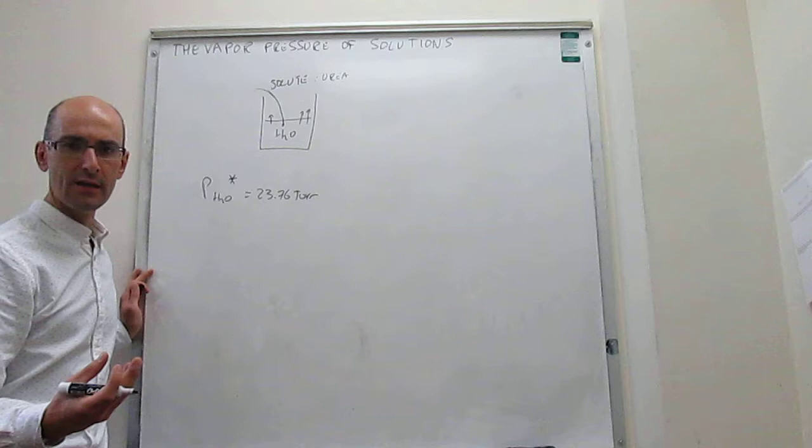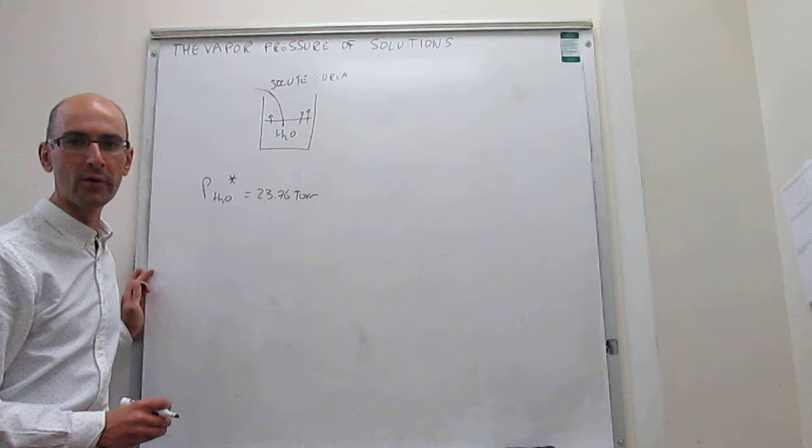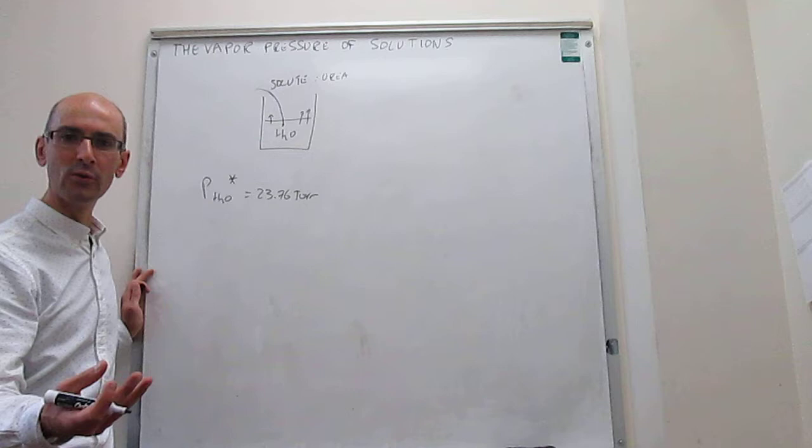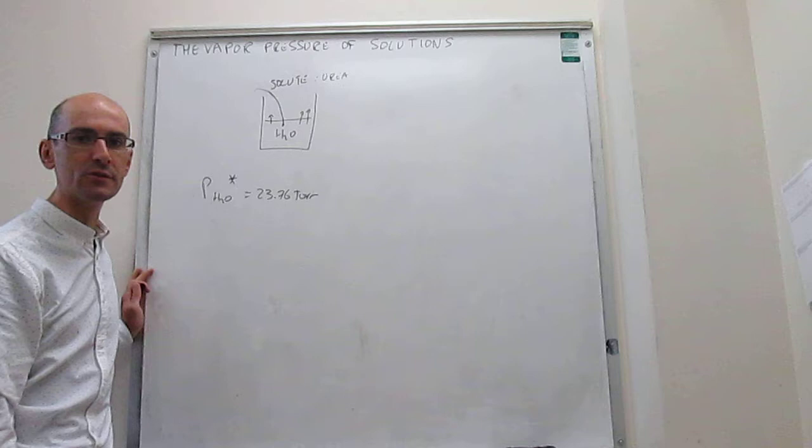Now there is an enthalpy penalty to it because you have to break the interactions between water molecules in the liquid. And then the vapor pressure is a balance of the entropy that you gain by putting molecules in the gas phase and the energy that you need to put in to be able to vaporize those molecules.